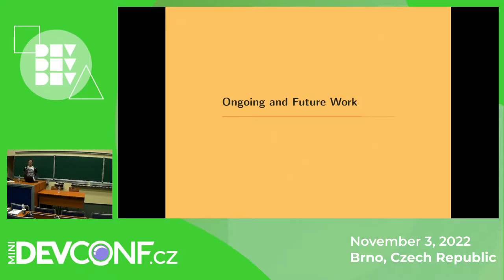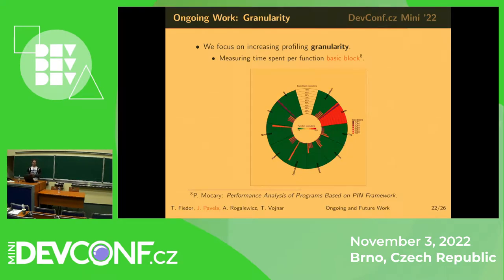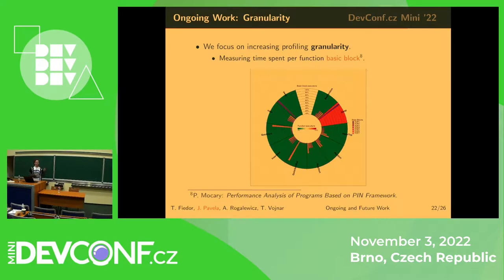To summarize: we are able to find existing performance issues that manifest in a new version of your software, and also identify potential issues that might cause trouble if not fixed. One area of ongoing work is increasing profiling granularity — instead of measuring just function duration, we'd also like to measure the duration of each basic block within your function, helping you pinpoint the exact root of your issue.